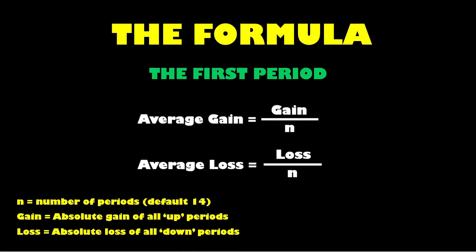We have to calculate the first period differently to the subsequent periods. For the first period, to work out the average gain, you add together the price gains from each of the periods in your lookback where the price went up, and then divide that total by the number of periods. For example, if you're using the default 14 periods and in 6 of those periods the price increased, you add together the price increase amounts from those 6 periods and divide that total by 14. Just the opposite for your average loss — add together the loss of price for each period where price went down and divide by the number of periods. That would be the losses from the remaining 8 periods, totalled up and divided by 14. Then divide the average gain by the average loss and you've got your relative strength for the first period.